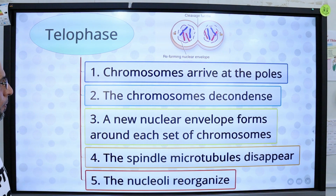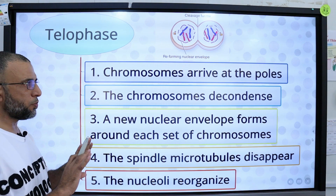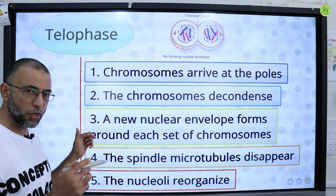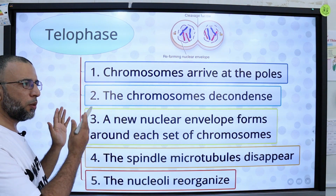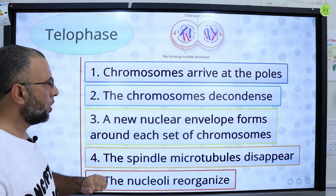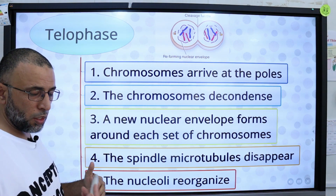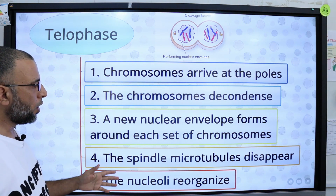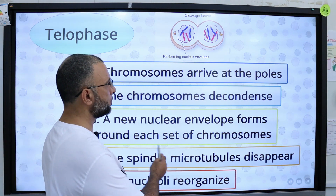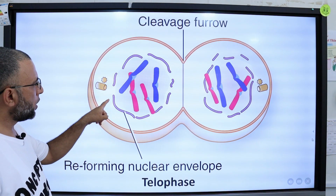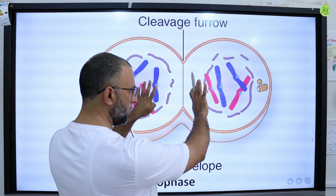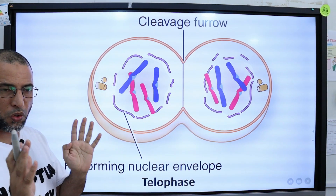In telophase, the chromosomes arrive at the opposite poles and the nuclear membrane reappears. When the nuclear membrane reappears, it means the one parental nucleus has divided into two daughter nuclei — this is mitosis. The chromosomes decondense to form a chromatin network, spindle microtubules disappear, and the nuclei reorganize. The nuclear membrane reappears around the chromosomes and the division into two daughter nuclei — called mitosis or karyokinesis — is complete.